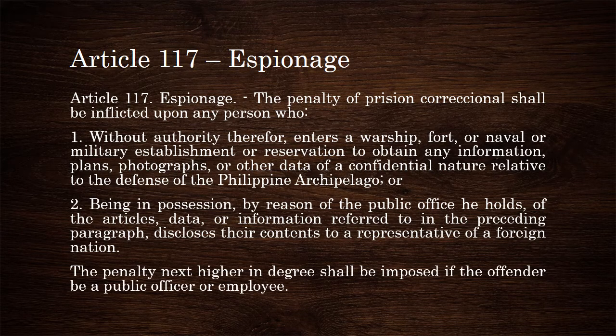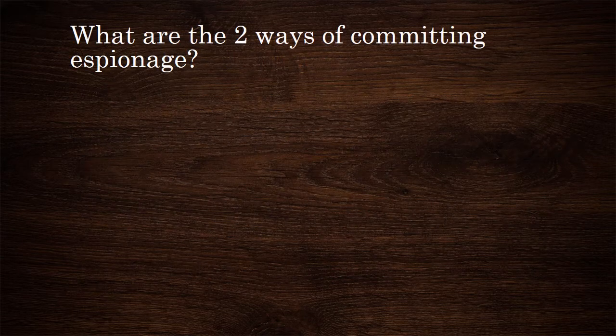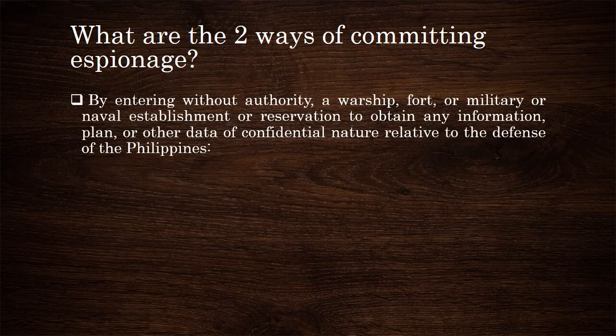The penalty next higher in degree shall be imposed if the offender be a public officer or employee. There are actually two ways of committing the crime of espionage. The first way is by entering without authority a warship, fort, or military or naval establishment or reservation to obtain any information, plan, or other data of a confidential nature relative to the defense of the Philippines.